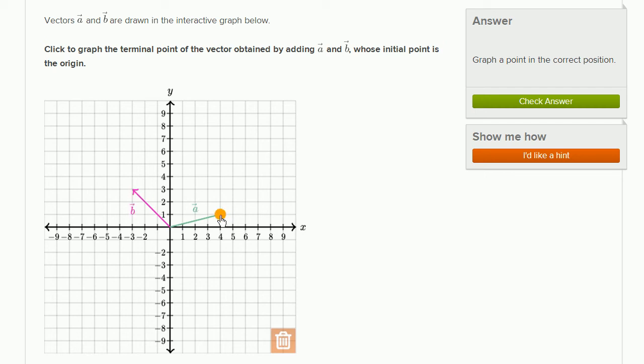So over here, you would go in the x direction, negative 3, and in the y direction, you would go positive 3, just like that. So this right over here would be the head of A plus B.